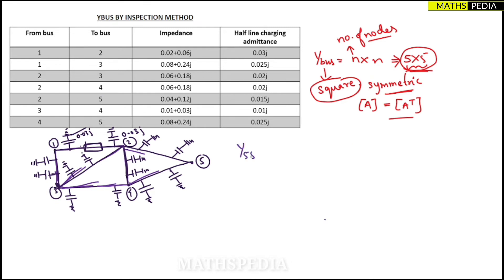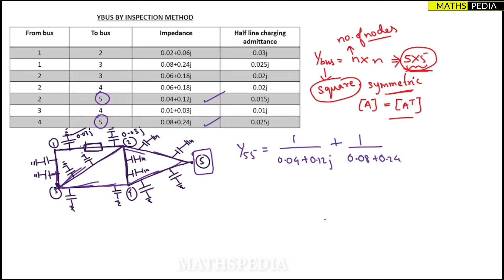For Y55, node 5 has only two lines connected. Add those admittances plus half line charging: 1/(0.04+0.12j) + 1/(0.08+0.25j) + j0.015 + j0.0425. The answer is approximately 3.75 − j11.2.